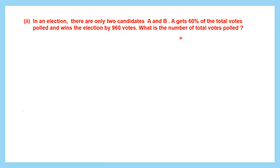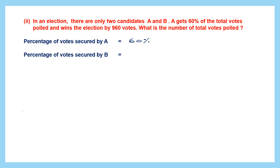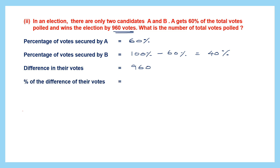We need to find the total number of votes polled. Percentage of votes secured by A is 60%, so B gets 100% minus 60%, which is 40%. The difference in their votes is 960, and the percentage difference is 60% minus 40% = 20%. So 20% of the total votes equals 960.